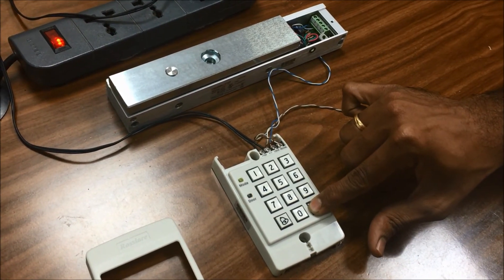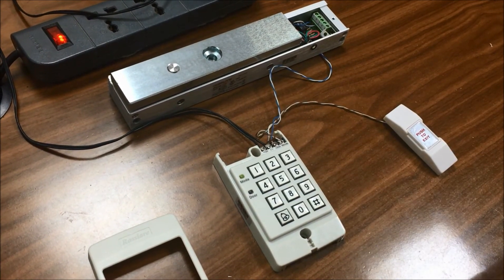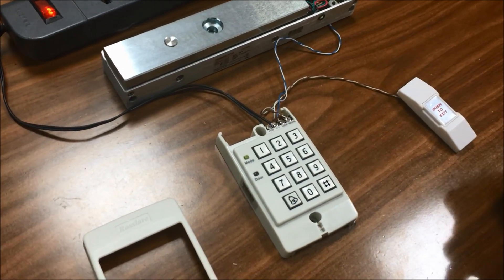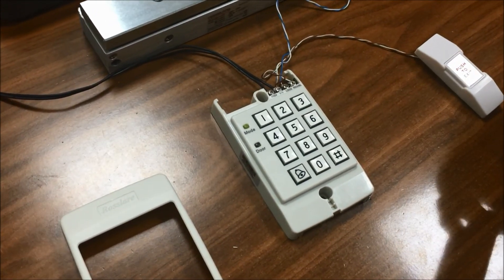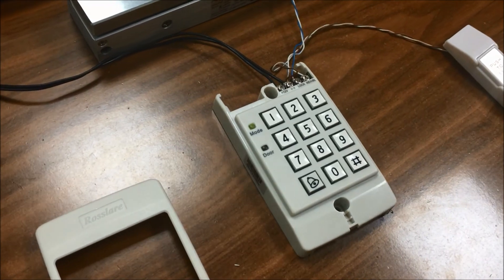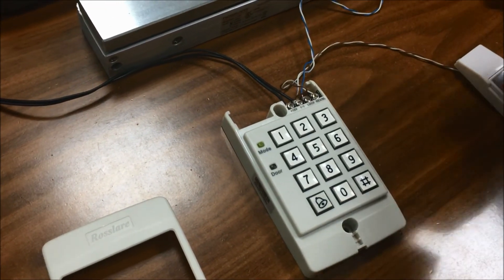Now back to normal mode. What we did: we entered programming mode, entered 001, and showed a number of cards to the device. Now we will show them back. You can see the door LED is green, and the door power is off.